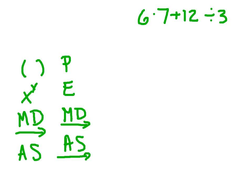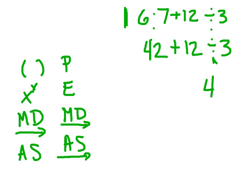Looking at the equation 6 times 7 plus 12 divided by 3: no parentheses, no exponents. We have a multiplication problem and a division problem. We solve the multiplication first because it's on the left — 6 times 7 equals 42. Our equation is now 42 plus 12 divided by 3. Next, 12 divided by 3 equals 4. Then 42 plus 4 gives us a final answer of 46.